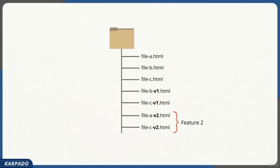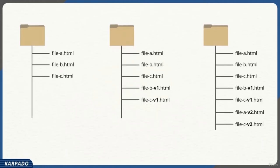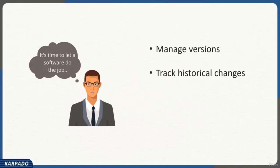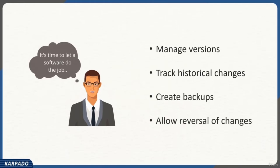However, Sundar started to notice that even this approach was not feasible, because it was becoming incredibly complex to manage multiple client projects. He needed to rename all files back to their original names before deploying to the remote server, and the ever-increasing files were creating problems both in organization and disk space. It was at this point Sundar realized it was time to let software do the job — a software that would manage versions, track historical changes, create backups, and allow reversal of changes. That's the birth of Git.